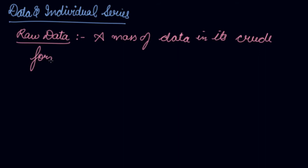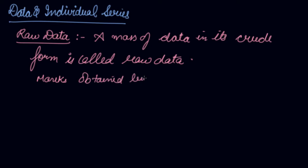In this video we will be studying about data and individual series. Whenever we collect some data, it is in a raw form. You call it raw data. A mass of data in its crude form is called raw data. For example, you have collected data which means the marks obtained by the